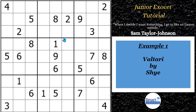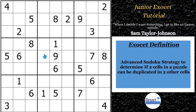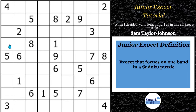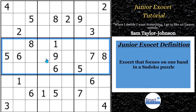This is our first example: Valtteri by Shai. I have covered this before — Simon Anthony solved it and I did an analysis of that solve. Let's go for a basic definition. An ExoSet is an advanced Sudoku strategy where you identify if two cells in a puzzle can be duplicated in two other cells. This tutorial is going to focus on just junior ExoSets. Junior ExoSets focus on one band — a band is three blocks in a row, either across horizontally or three vertically, also called a tower. It focuses on one band and three rows or columns outside of the band. This is a highly advanced strategy. You only want to try this when nothing else works.